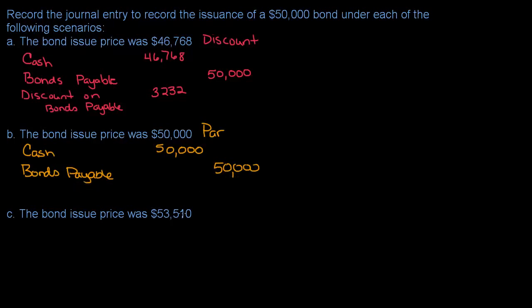Now let's look at the third one. In the third one, my bond issue price is $53,000, which is more than the face value. So in this one, I've got a premium.